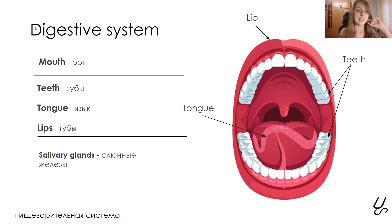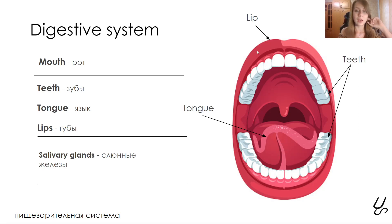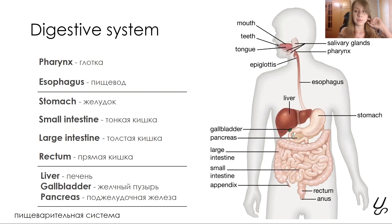Digestive system. Digestion is a really very important function. The process starts from the mouth, where we have our teeth, tongue, and lips. Here we'll also name the salivary glands. Then comes the pharynx, followed by the esophagus.